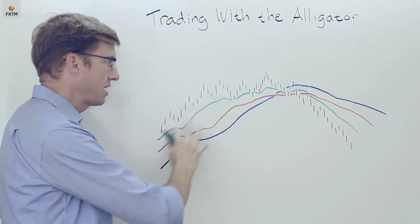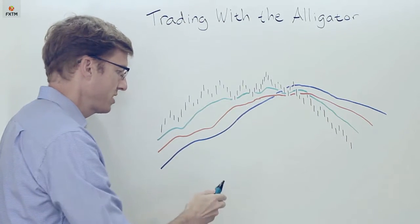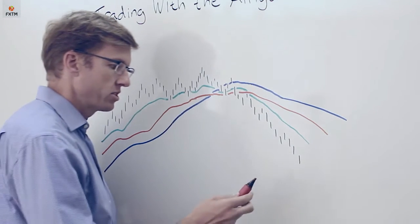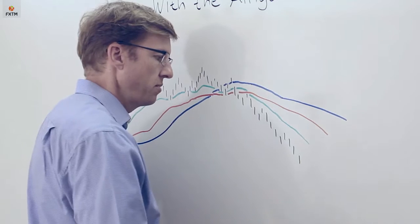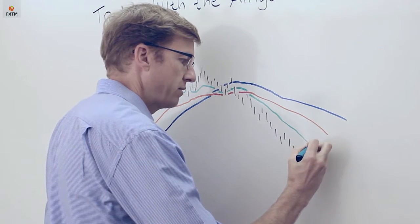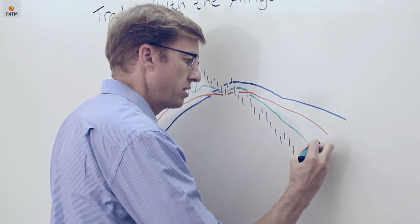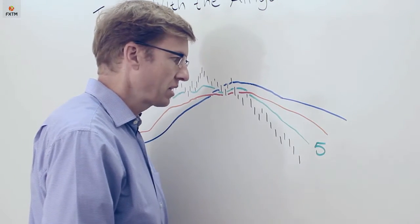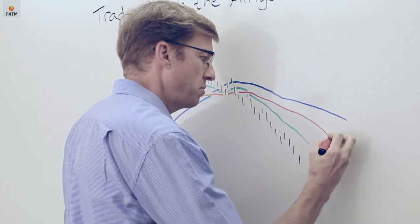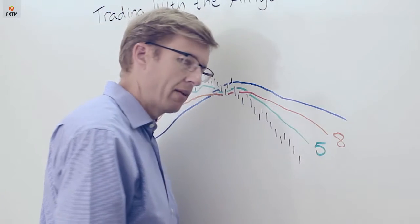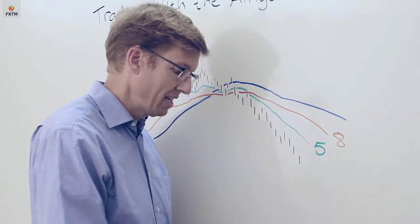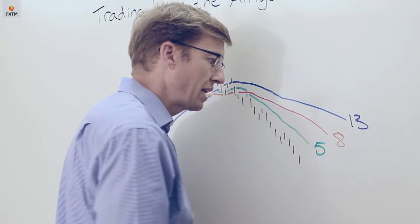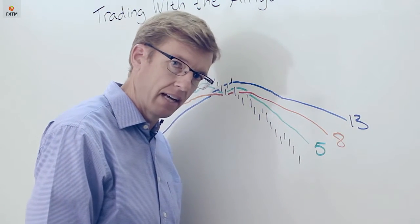Here I've drawn an example of the alligator on my chart and it consists of three smooth moving averages. The first and fastest is a five-period smooth moving average that we call the lips of the alligator. The second, this red one, is an eight-period smooth moving average which we call the teeth of the alligator. And finally we have a thirteen-period smooth moving average which we call the jaw of the alligator.